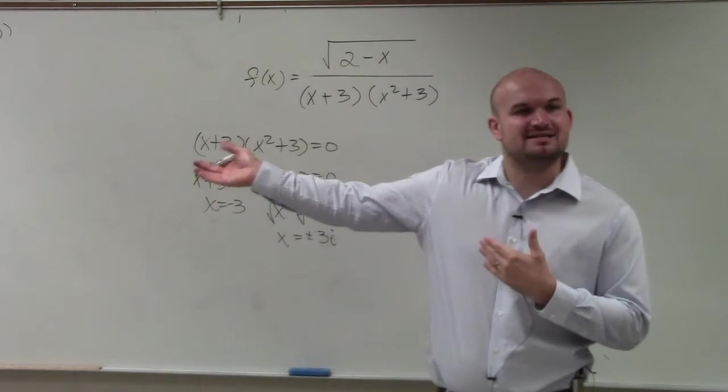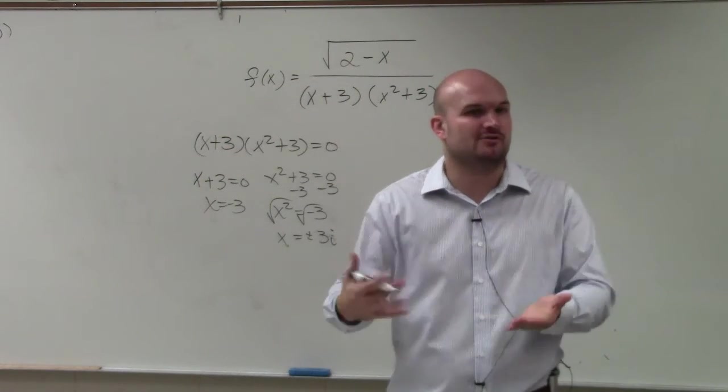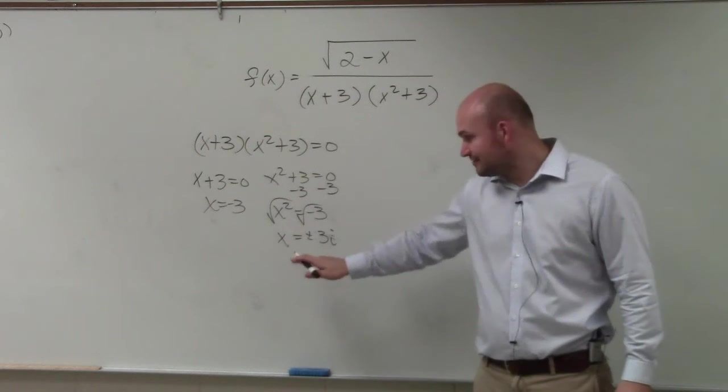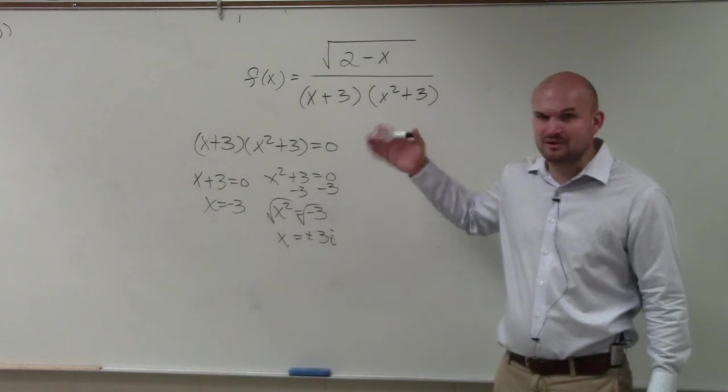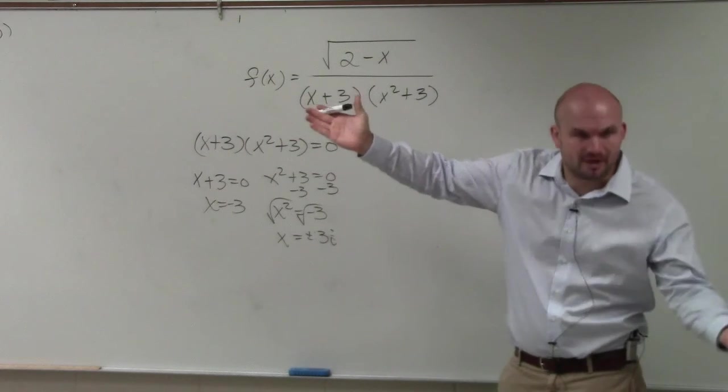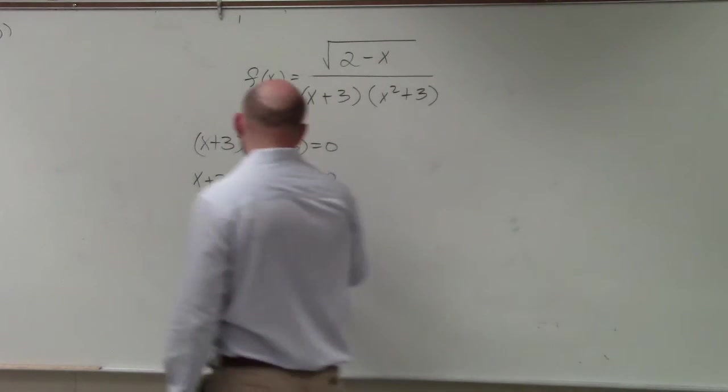But ladies and gentlemen, the implied domain says for what real numbers can we plug into the function and get back a real number? i is not a real number, right? So even though plus or minus 3i will make our denominator 0, that's not a part of our definition. It's only for what real numbers can we plug in that are not going to produce something. So we don't really care about this.